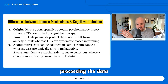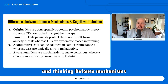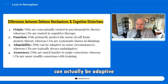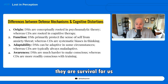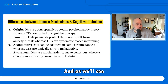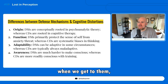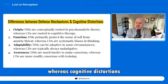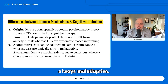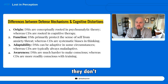Defense mechanisms can actually be adaptive in some circumstances — they're not all bad. There are times when we need them; they are survival mechanisms for us. Some are truly adaptive and considered good defense mechanisms. Cognitive distortions, on the other hand, are typically always maladaptive — even though they're protective, they don't actually serve us well in the long haul.